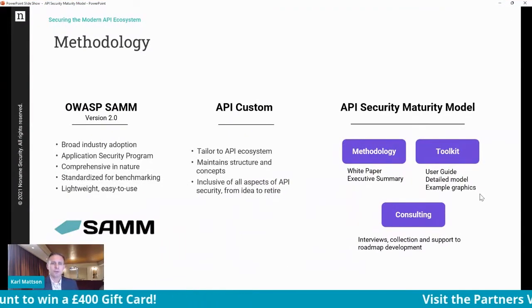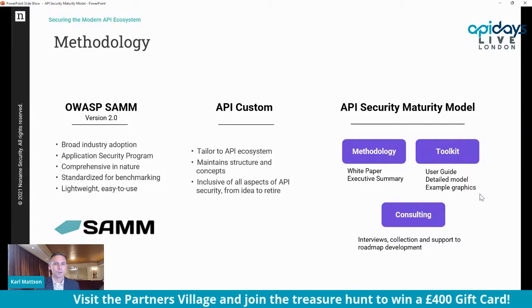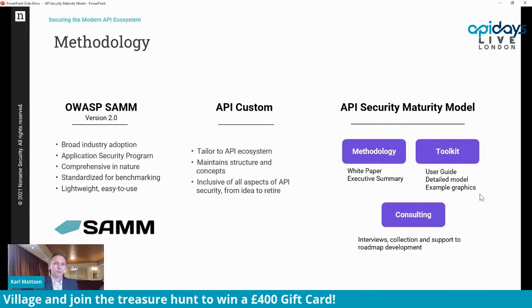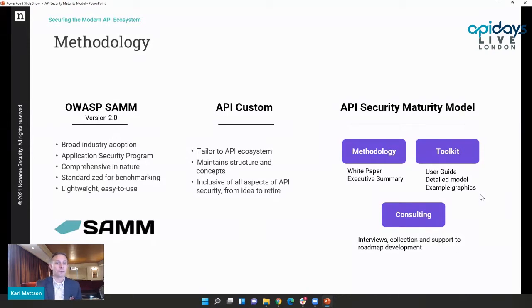We just had a session about the OWASP API Security Top 10. Another body of work from OWASP is called the Software Assurance Maturity Model — SAMM. OWASP SAMM version two is the current version, with reasonably broad industry adoption across IT, healthcare, and financial services. The software assurance practices are very durable, independent of the vertical you work in. It's comprehensive and standardized — two organizations on different coasts in different verticals could evaluate themselves against this model and reach conclusions about their relative maturity in a fair, scorecard-like way.